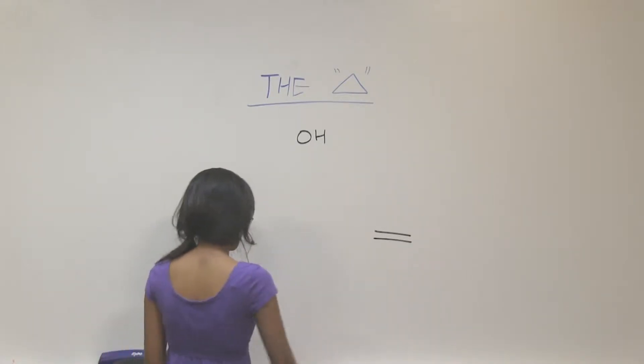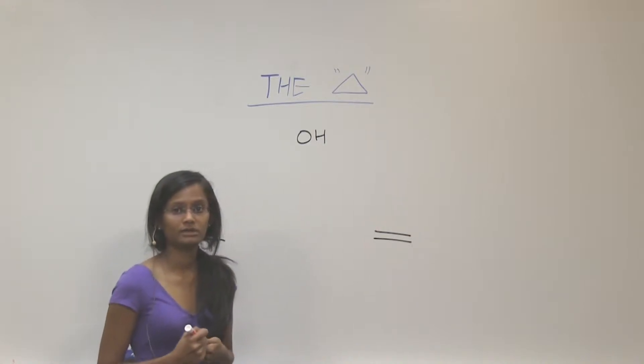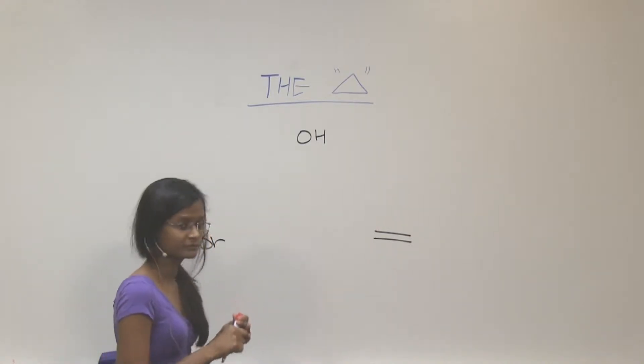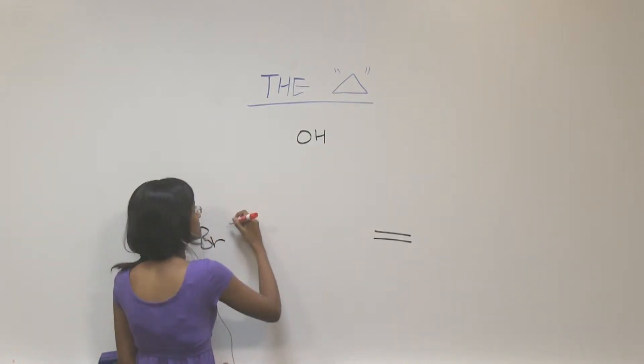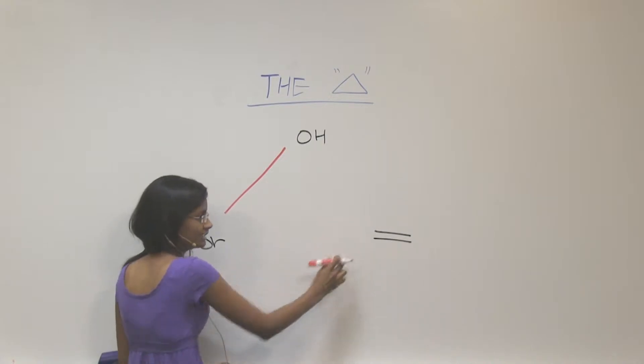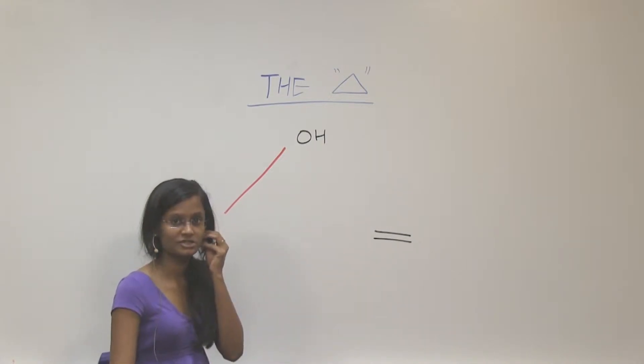Alright, so let's ask ourselves, where do we learn these concepts? Where do we learn these reactions? So the first one that you have learned is, let's talk about alkene. Alkene is the first reactions that you learn in chapter 6.